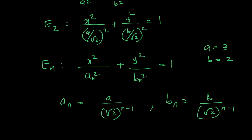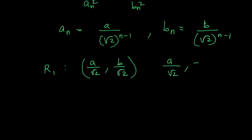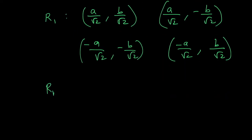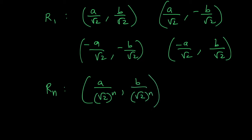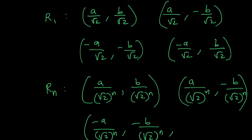Similarly, R1 has vertices (a/√2, b/√2), (a/√2, −b/√2), (−a/√2, −b/√2), (−a/√2, b/√2). Following the pattern, Rn has vertices (a/(√2)^n, b/(√2)^n), (a/(√2)^n, −b/(√2)^n), (−a/(√2)^n, −b/(√2)^n), (−a/(√2)^n, b/(√2)^n).